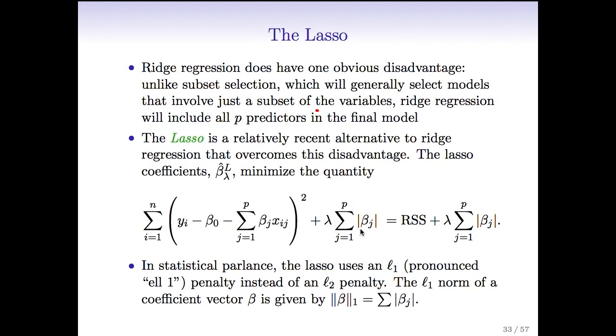So it's a shrinkage towards zero using an absolute value rather than a sum of squares. This is called an L1 penalty by analogy to the L2 penalty. The L1 penalty is just the sum of the absolute values. It's a norm, but it's called the L1 norm rather than the L2 norm.